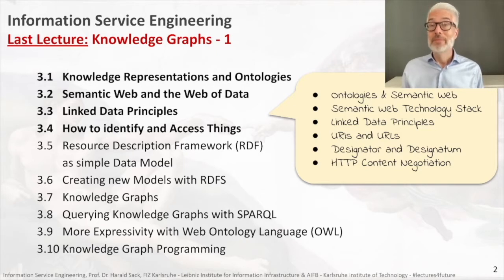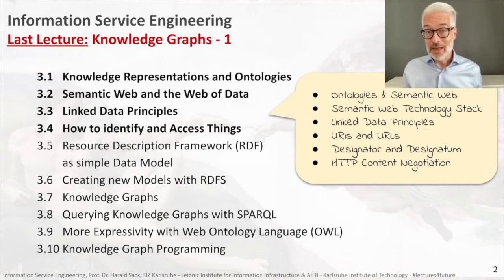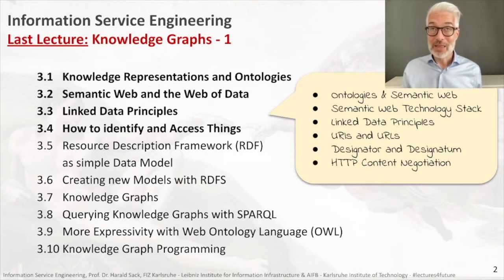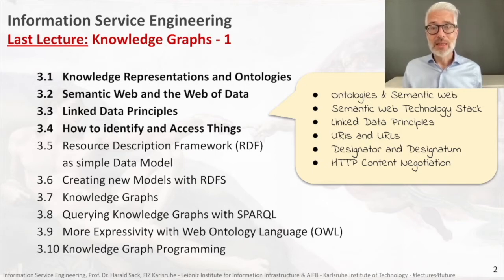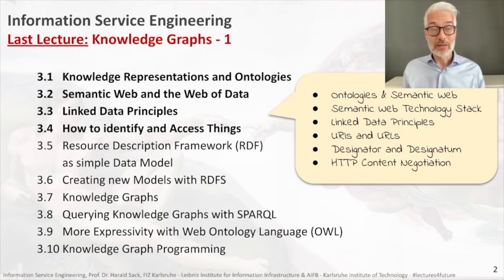Of course, real things are not on the web — there are only their representations. However, we can use them and make statements and facts with them as if they were the things we are talking about themselves. This is a principle we have already adapted from the use of natural language, and we know this from semiotics — the semiotic triangle and how we use that.